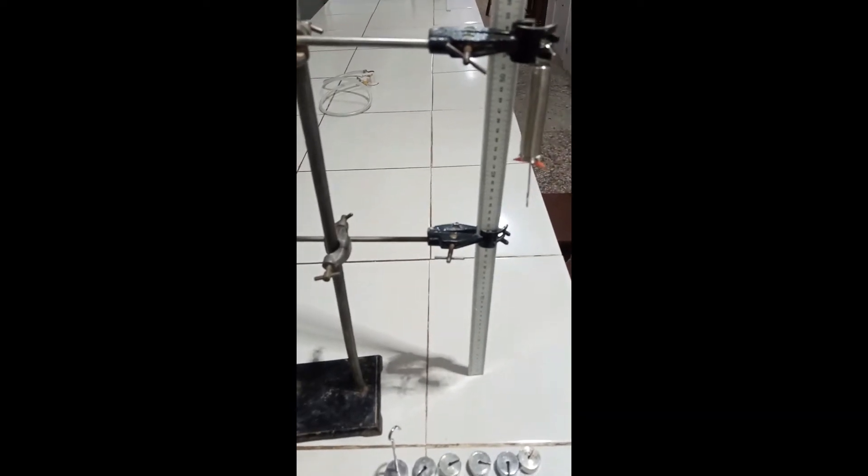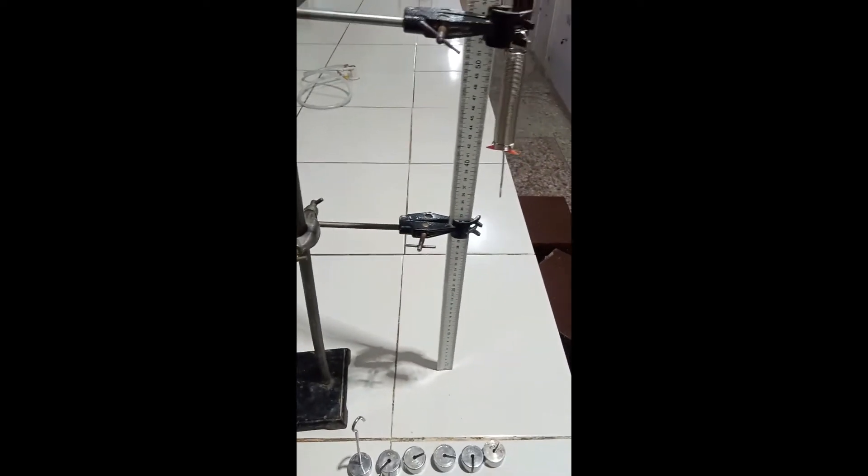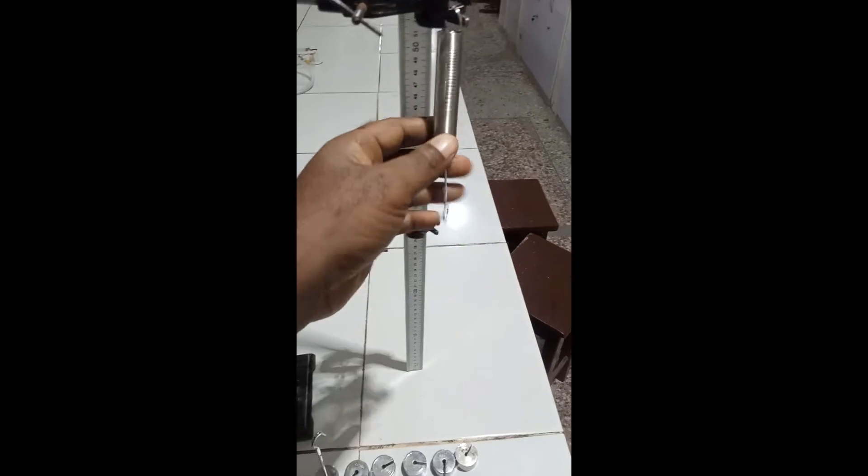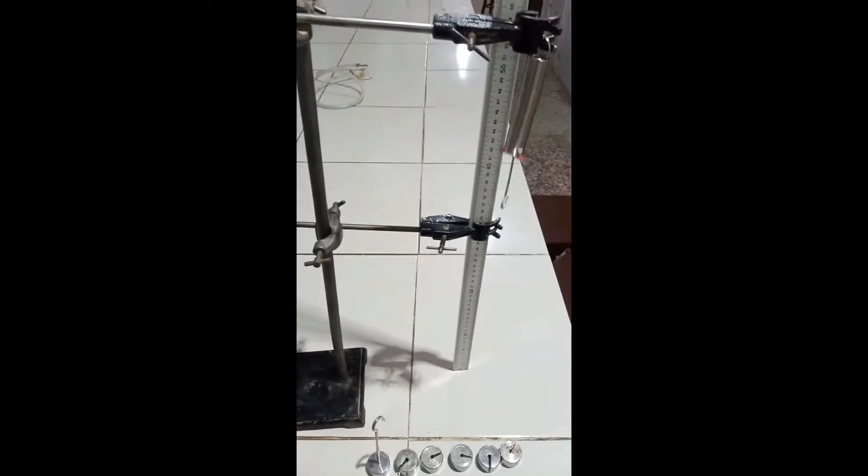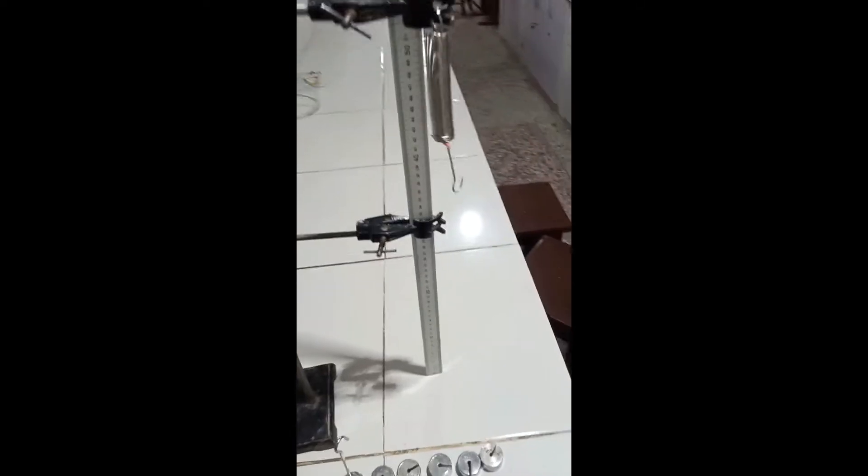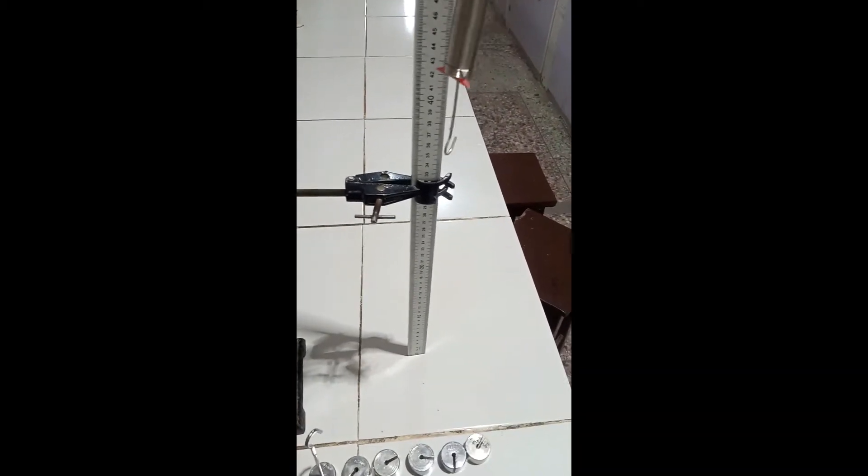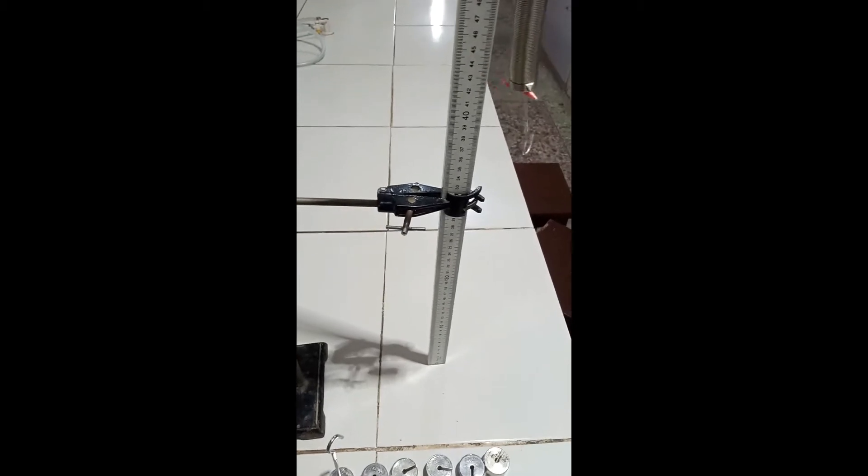To achieve that, we are going to be using a retort stand as you can see, meter rule, and a spiral spring, and of course sets of masses. The procedure would involve us first of all finding the original length of the spiral spring and then inserting sets of masses, finding the extension produced.